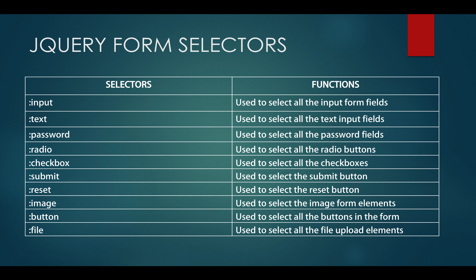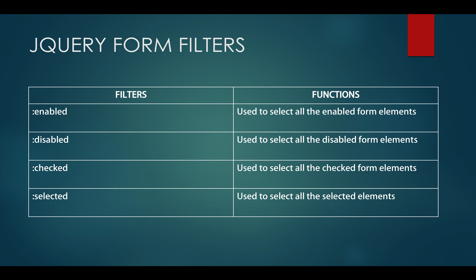So let's see about the basic form selectors. The input selector is used for selecting all the input elements in a particular form. The text selector is used for selecting all the text elements, password for all the password fields, radio for all the radio buttons present in the form, checkbox for all the checkboxes, submit button, reset button and image buttons, a normal button and a file upload. As with normal selectors, the form selectors also have filters that can be used for more complex selection.